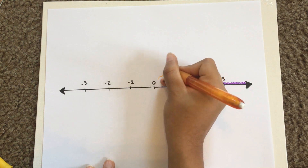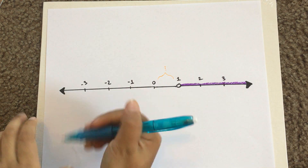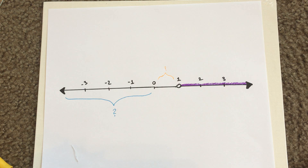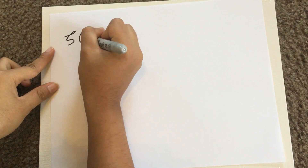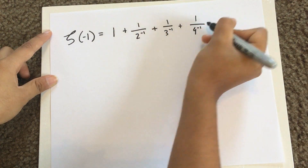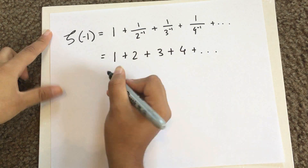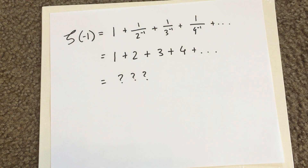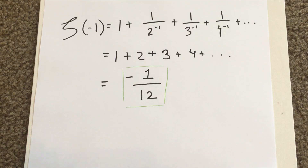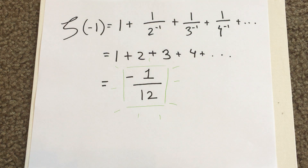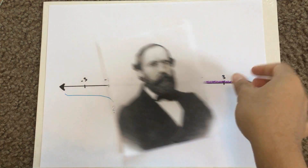But what if we plug in numbers from 0 to 1? And what about negative numbers? Surely it doesn't make any sense when s equals something like negative 1 — that just turns into 1 plus 2 plus 3 and so on, which should go to infinity. Well, in fact, in a sense, this adds up to negative 1 over 12.